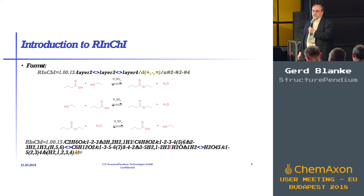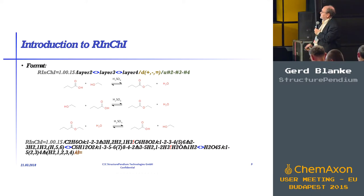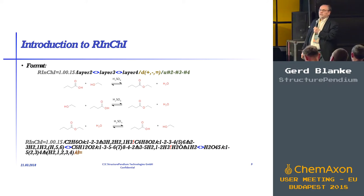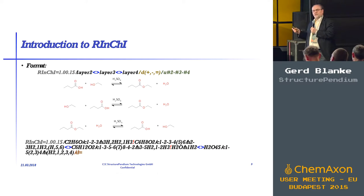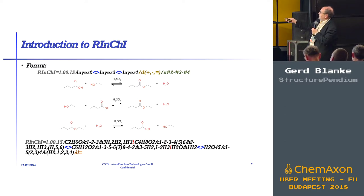On top of that, we have a D section, which basically encodes the direction: forward, backwards, minus, or equilibrium. Quite interestingly, most other file formats do not handle backward reactions and equilibriums — and that has an important outcome described a little bit later.